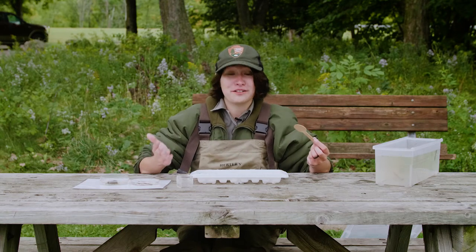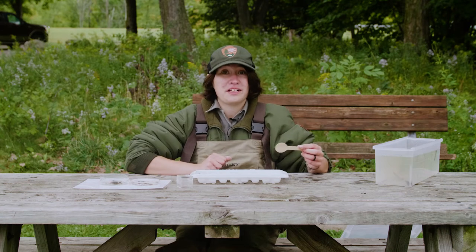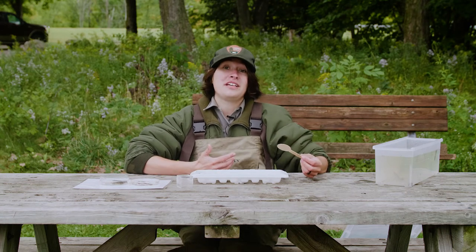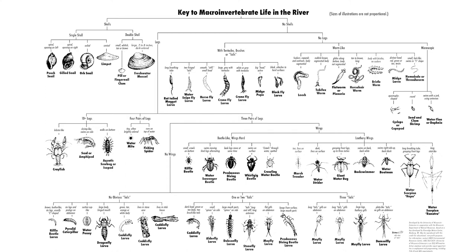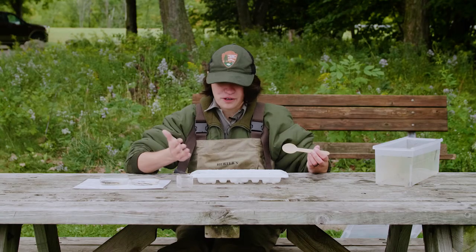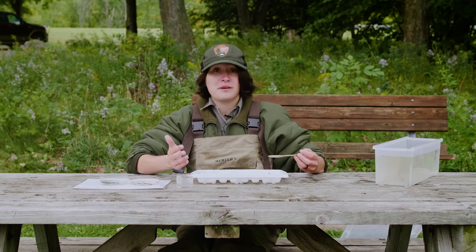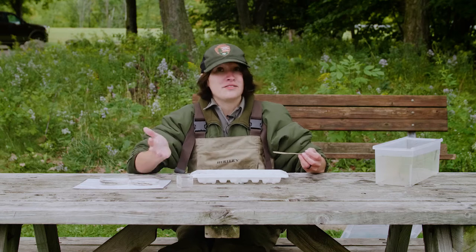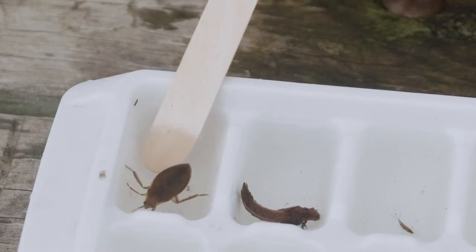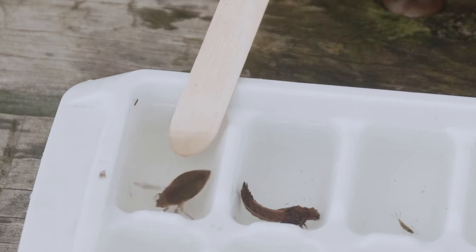Now try to figure out what we are looking at. Scientists use what is called a dichotomous key, which is a series of yes or no questions to figure out what you're looking at. So let's pick one of our macroinvertebrates and figure out what it is. Let's go with this one.